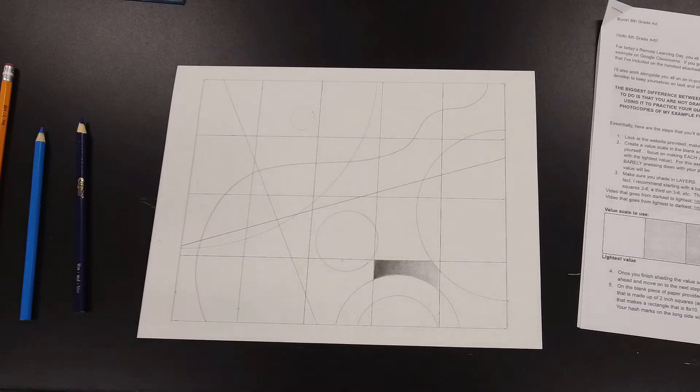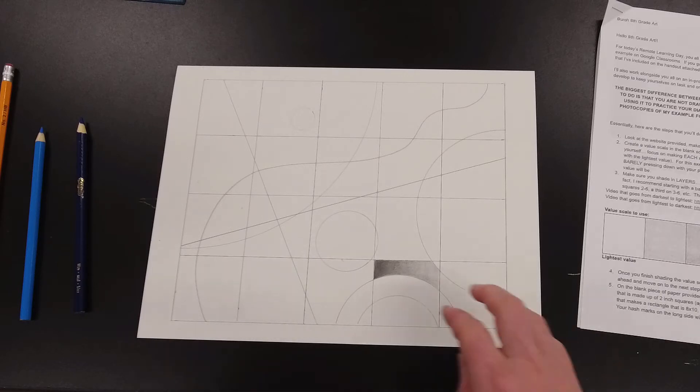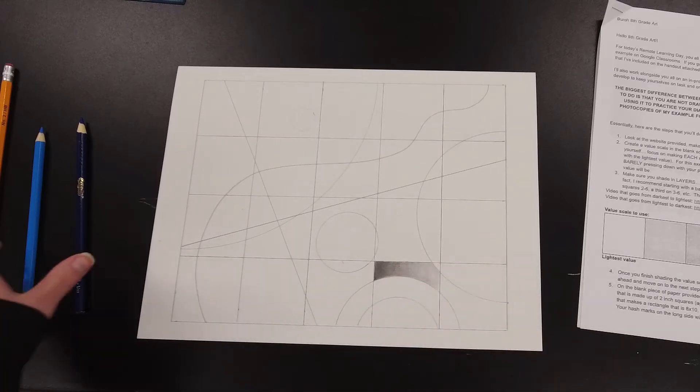So now I've got my shattered values project started. I've already shown you all how to create the grid, how to add the wavy lines, the diagonal lines, the circle, and how to get started with your graduated value scale.